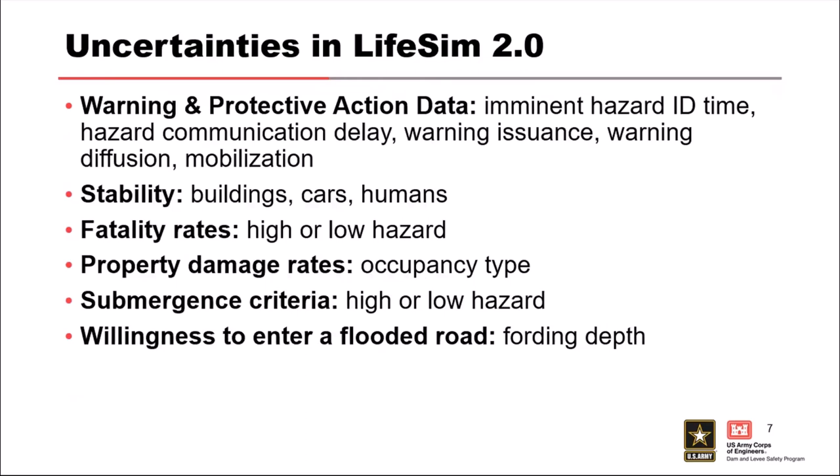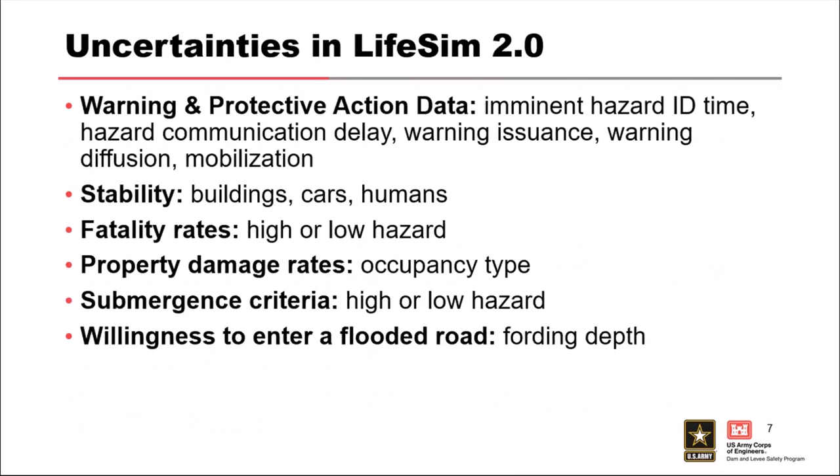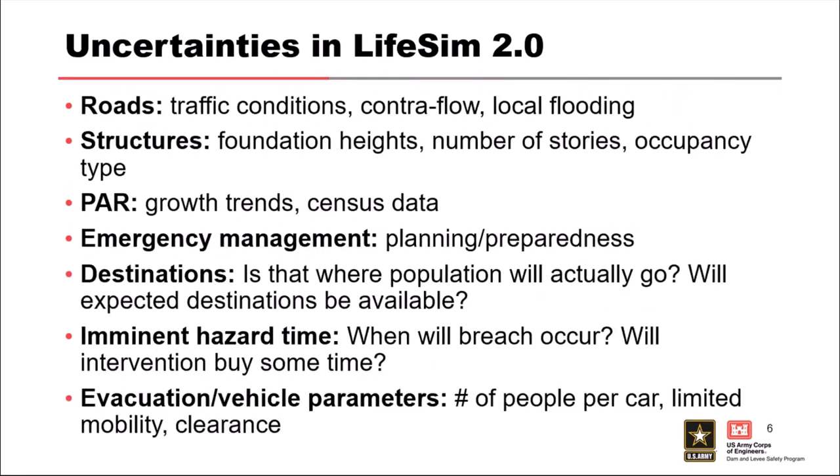When we focus on uncertainty in LifeSim, we look at things like how people will redistribute, uncertainty around warning time, and uncertainty around protective action initiation rates. We'll set up distributions for some of those key things. Any questions about this general list?